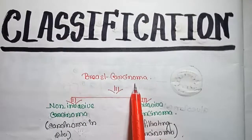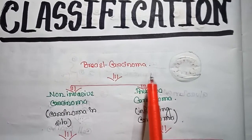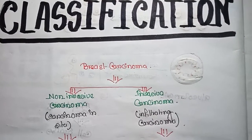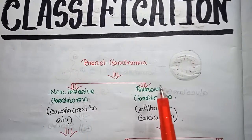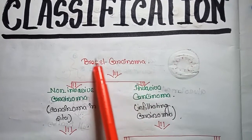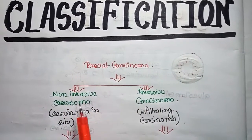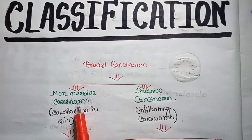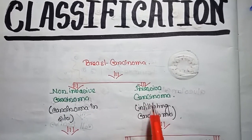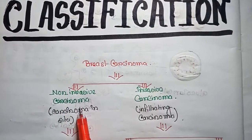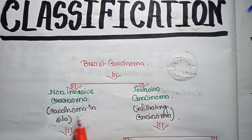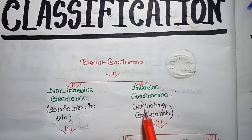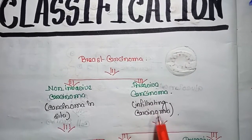Breast cancer is classified depending on the combinations of histological patterns and cytological characteristics. Depending on those, breast cancer can be divided into two groups: non-invasive carcinoma and invasive carcinoma. Non-invasive carcinoma may also be called carcinoma in situ, and invasive carcinoma may also be called infiltrating carcinoma.